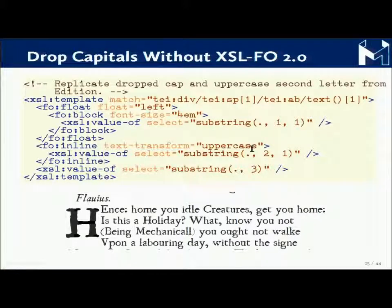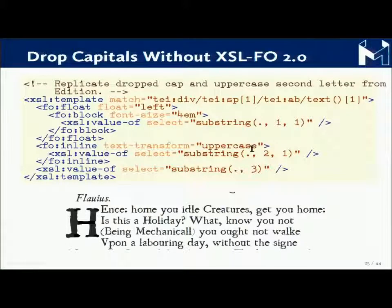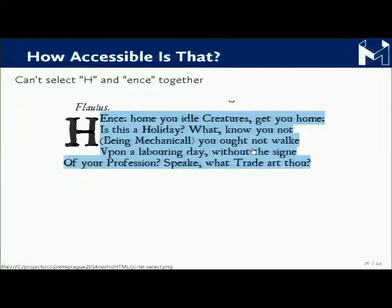So in the absence of an XSL-FO 2.0, what can you do? You fall back to what you do with 1.1 — you make a float for the capital 'H.' This is some of the XSLT that produced the FO that made the page you saw. I was able to float the 'H', and because I have XSLT I can do what I like with the XML — I was able to make a nice capital 'E' to more closely mimic the First Folio. But floats aren't very good; perhaps if we had a better specification that was implemented we'd be able to do drop caps by something other than faking the floats.